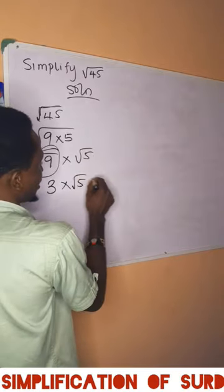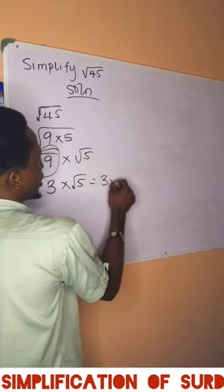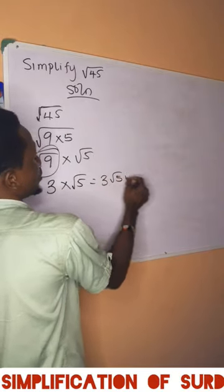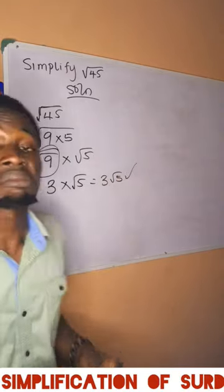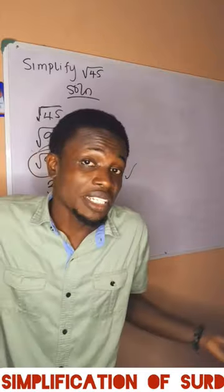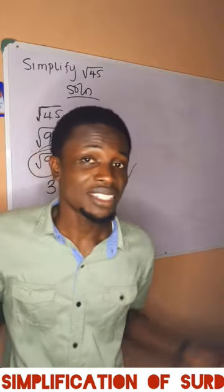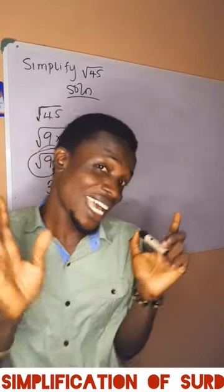So the answer is 3 times square root of 5. That's 3 root 5. Nothing more. Bye.